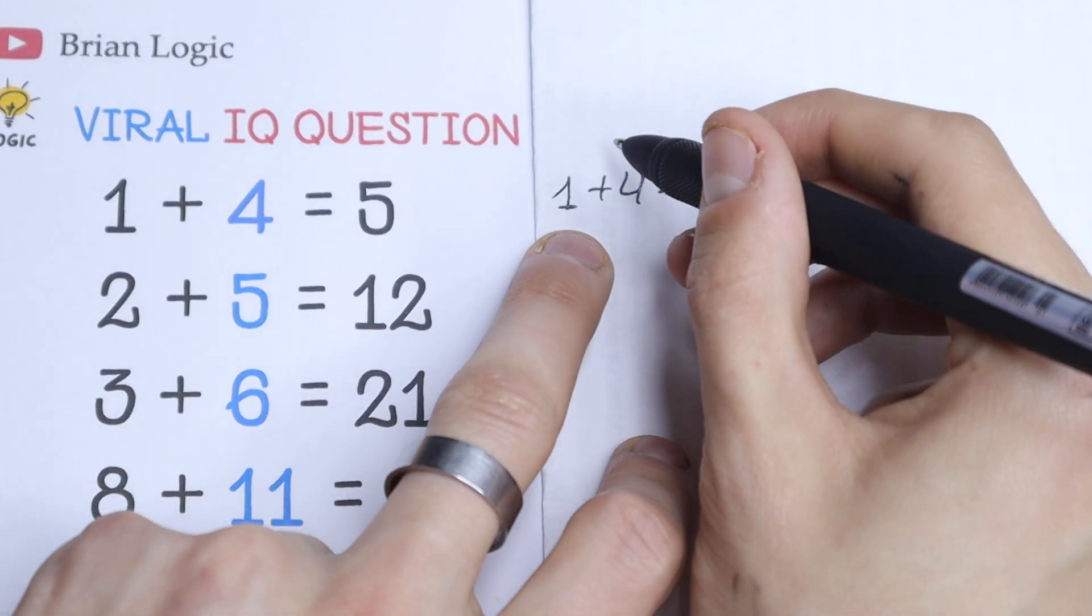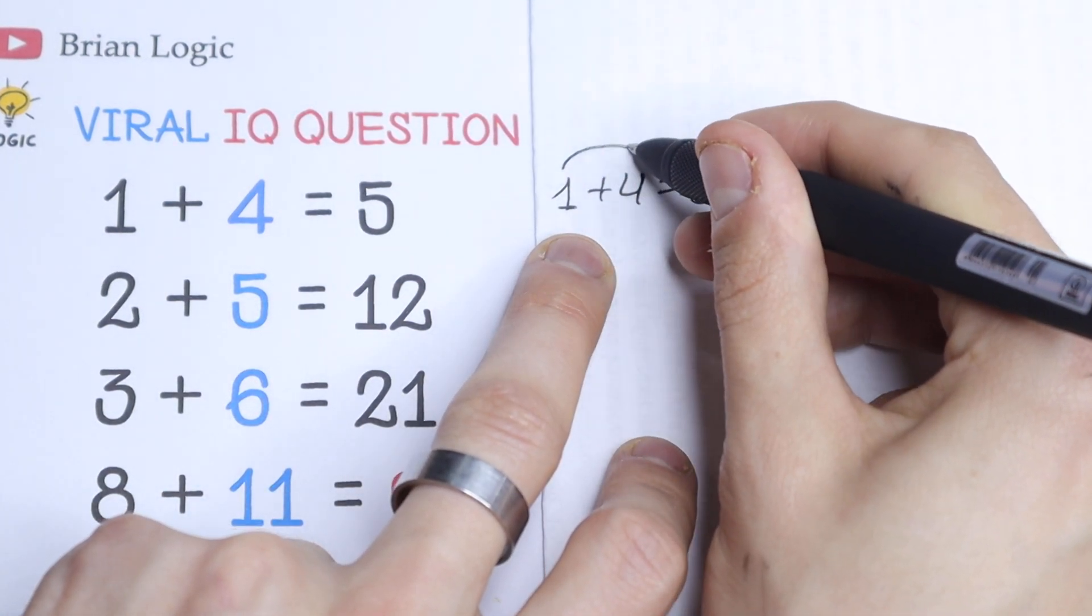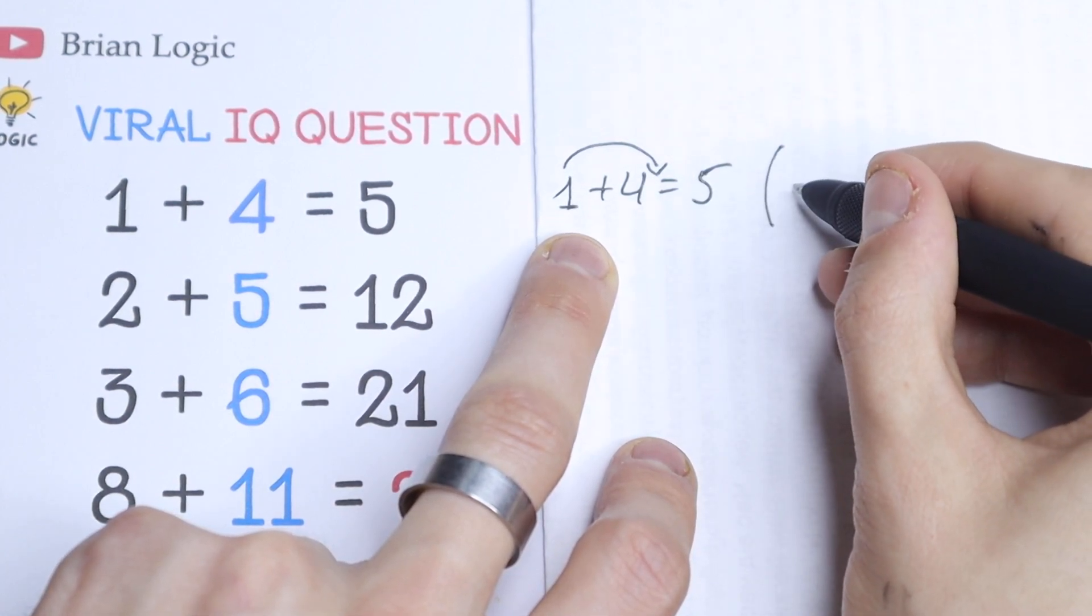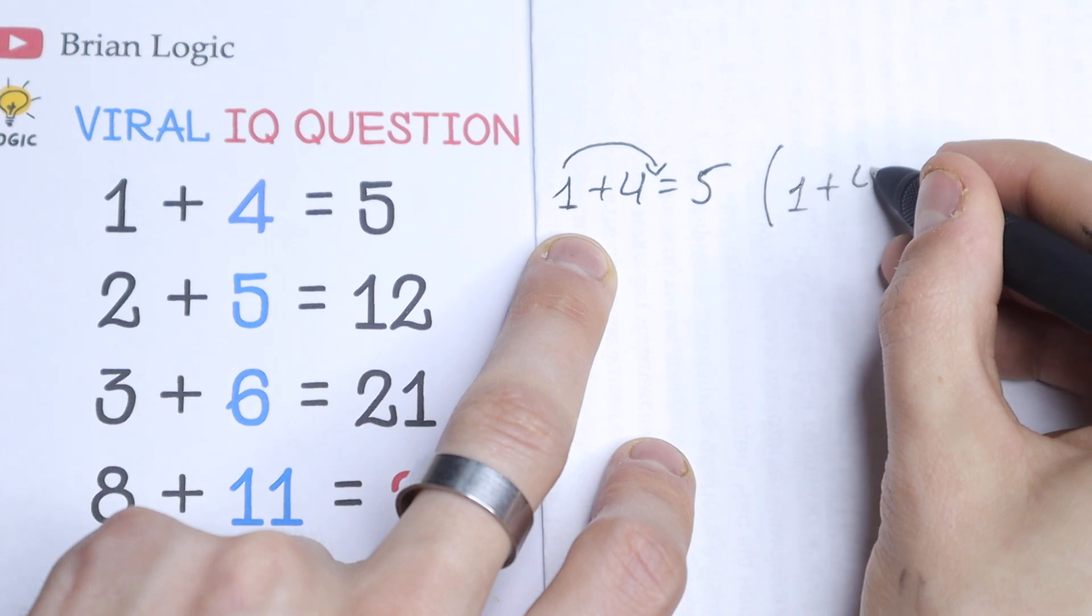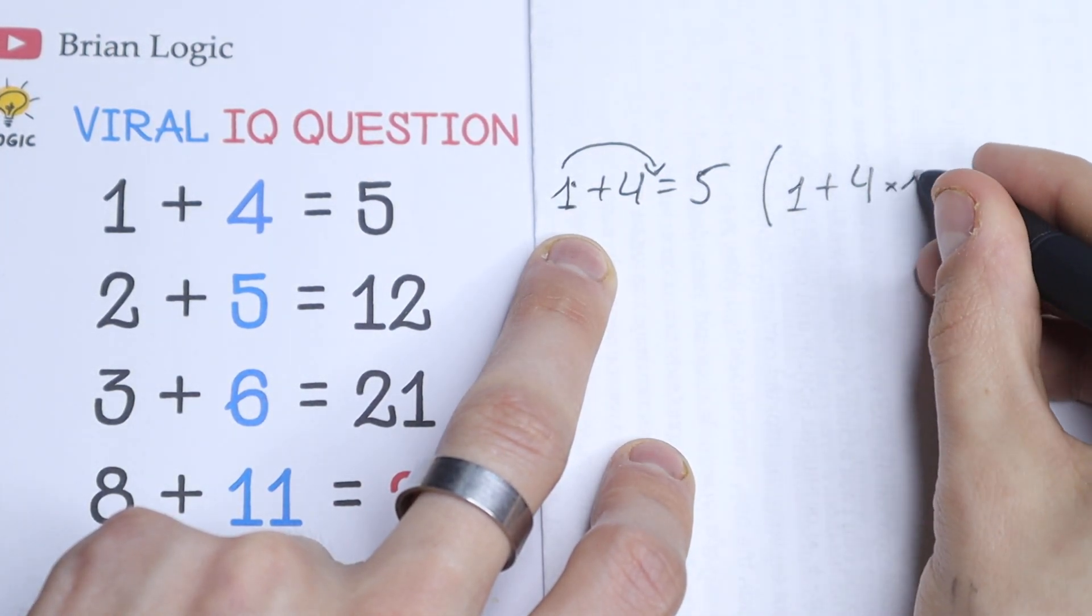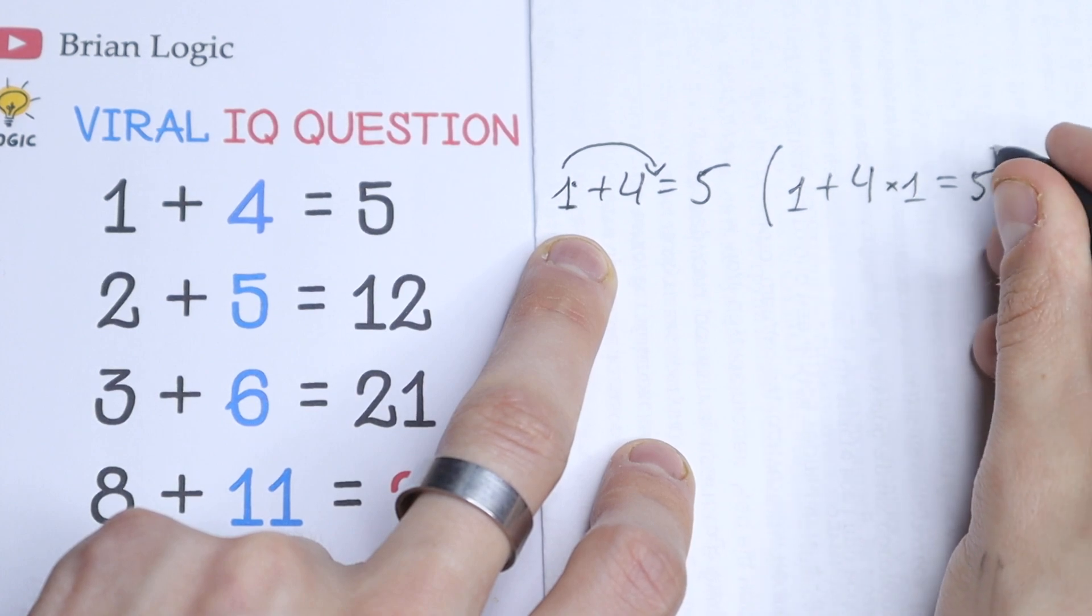So take a look at what I suggest. If we multiply this first number by this 4, what we will have? We will have 1 plus 4, and this number multiplying by this 4. 4 times 1, which is equal to 5, which is correct.